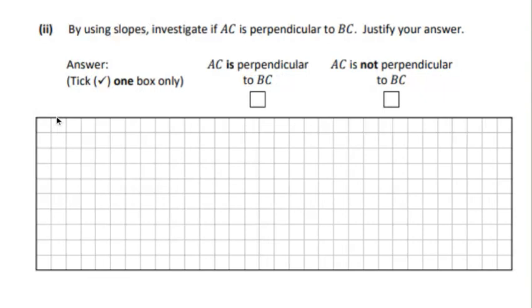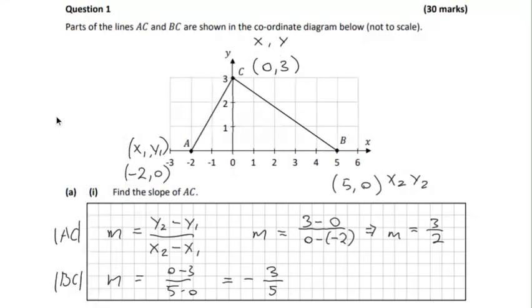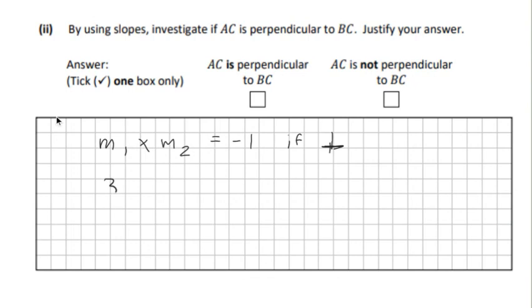To prove that they're perpendicular, we use this rule: m1 multiplied by m2 equals minus 1 if perpendicular. The first slope is 3 over 2 and the second slope is minus 3 over 5. Our result for AC and BC is minus 9 over 10, which is not equal to minus 1. So it's not perpendicular.